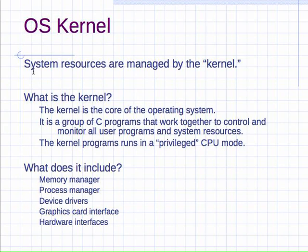At the very lowest level of software is the kernel — the operating system kernel. System resources are managed by this kernel. The kernel is the core of the operating system; it's a group of C programs — not just one single program, but a bunch of programs that work together to control and monitor all user programs and system resources. Kernel programs are run in a privileged mode on the CPU, which is actually a physical bit set in the CPU.